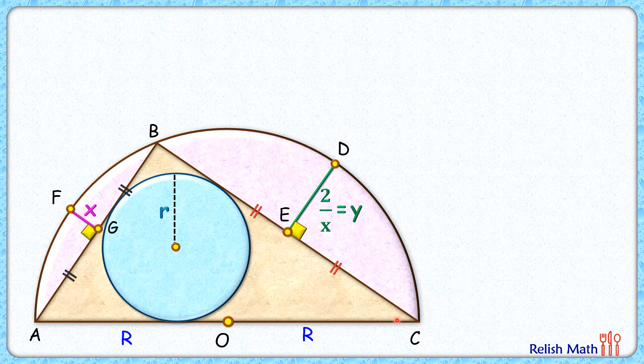Now AC is the diameter and thus angle B will be 90 degrees here. And this DE is perpendicular bisector of BC and thus by theorem when we extend it will pass through point O here. OD is radius and thus OE will be R minus y centimeters.